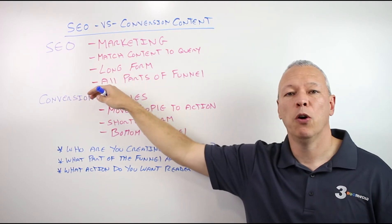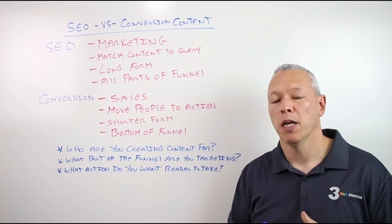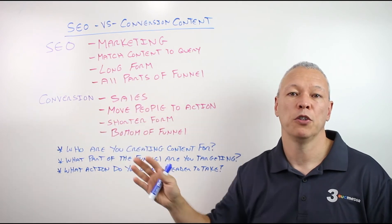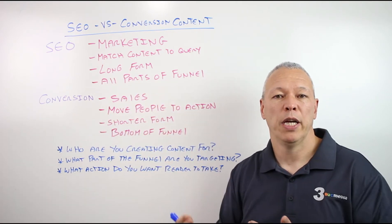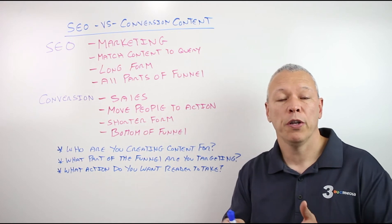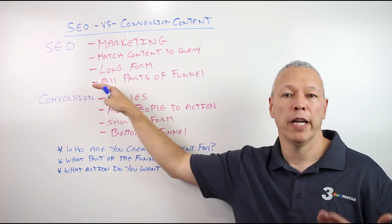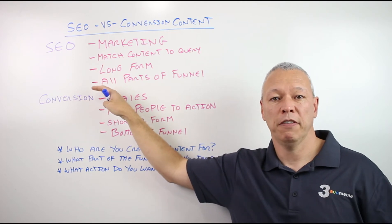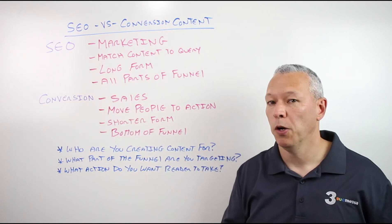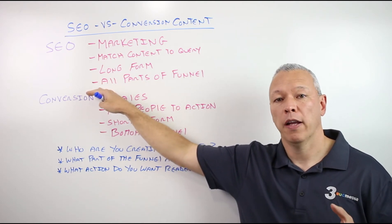SEO can target all parts of the sales funnel — the top, the middle, and the bottom. One piece of content doesn't target all parts, but you can create content targeting people at the top of the funnel who are just starting to gather information, or people in the middle, or people at the bottom who are getting ready to make a purchase decision. An example would be writing an article on 'Should I hire a certified financial advisor or certified financial planner?' — that's a bottom-of-the-funnel SEO article targeting someone ready to hire.